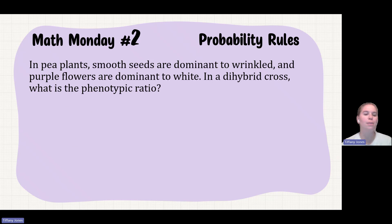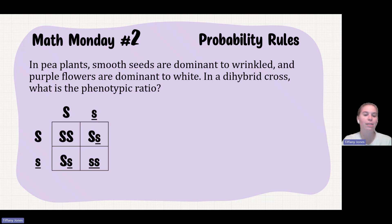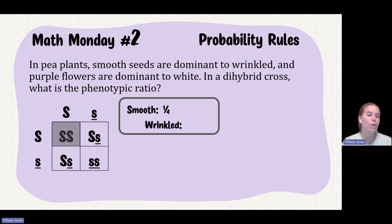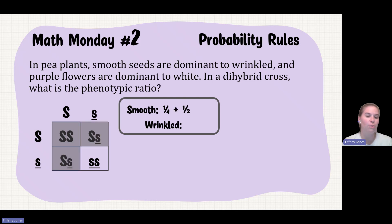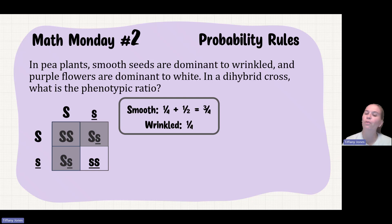Let's first look at the smooth. If I cross two parents that are heterozygous for smooth, I find that one-fourth of them are going to be homozygous dominant. There's also a one-half chance that offspring are heterozygous. So the probability of smooth is one-fourth plus one-half, which gives me three-fourths. And one-fourth of them will be wrinkled.